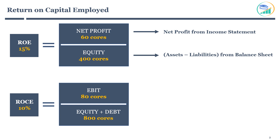Operating profit is also known as EBIT, which stands for earnings before interest and tax. It can also be calculated as net income plus interest on debt and taxes paid to the government. It is essentially the operating profit of the company before paying interest on debt and taxes.